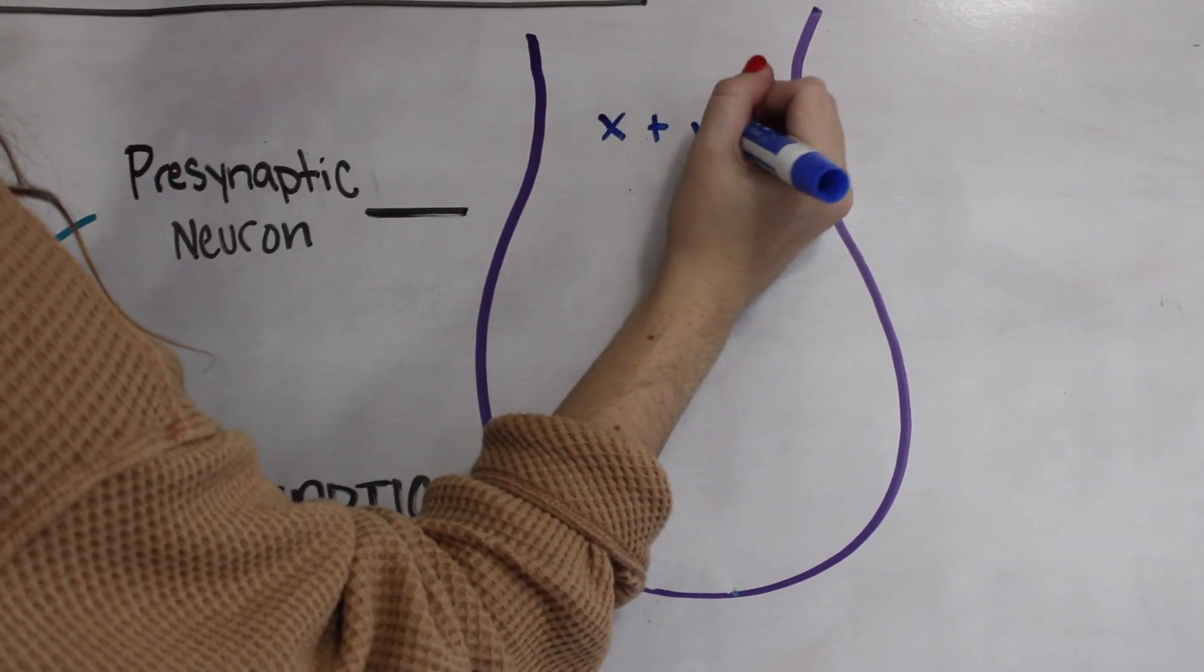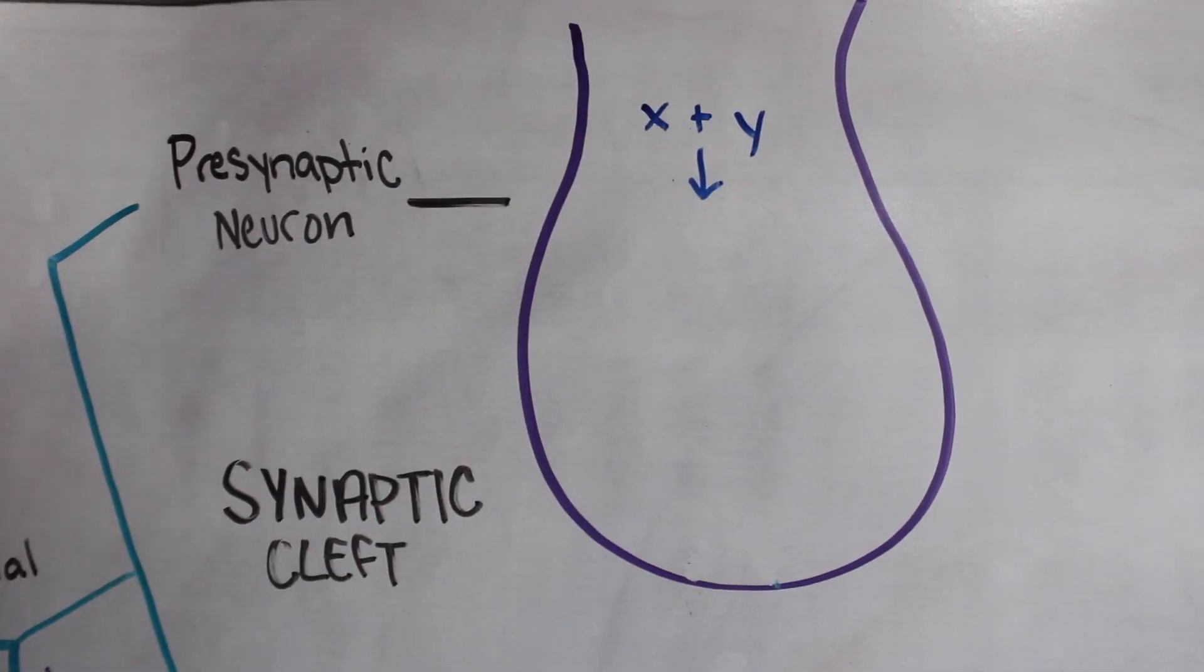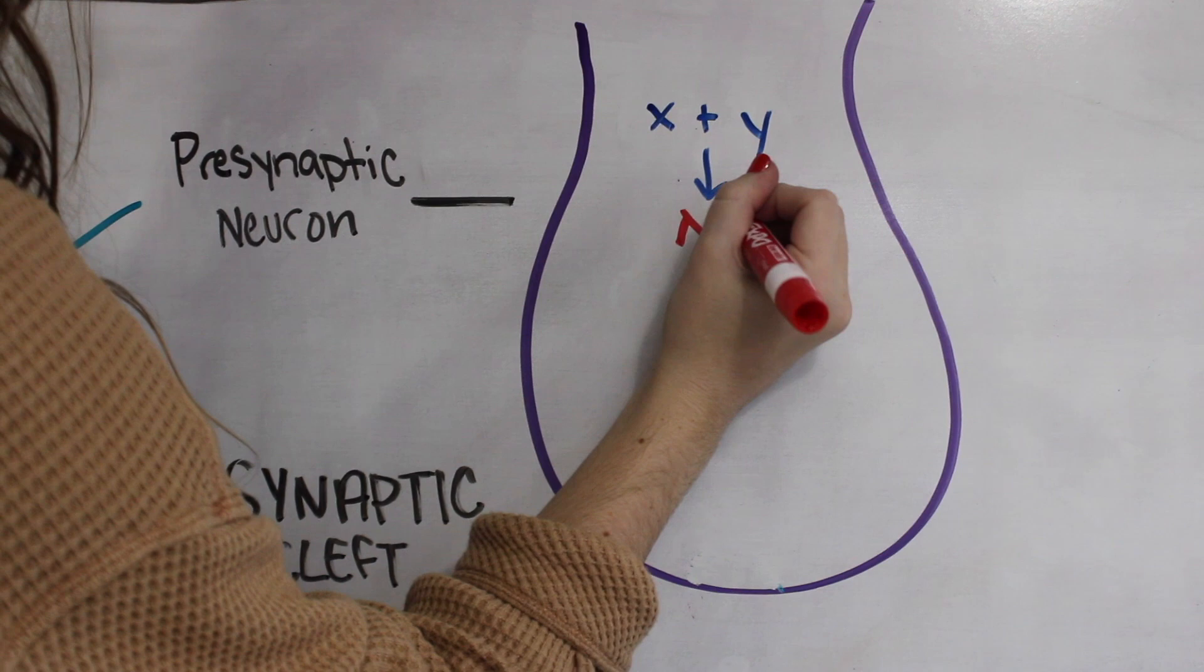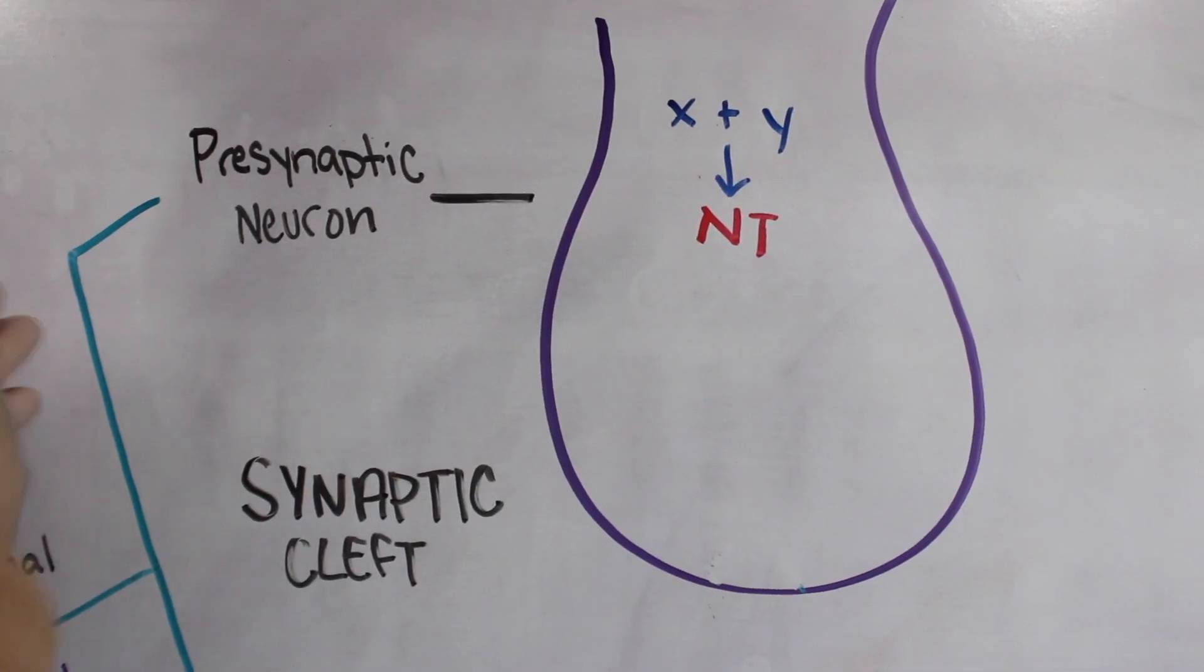The first step is called synthesis. In this step a biosynthesis precursor represented by X and an enzyme represented by Y come together to create the neurotransmitter.